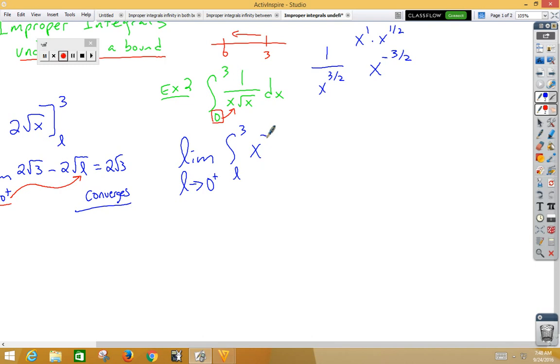So we're integrating x to the negative 3 halves dx. Well, when you integrate x to the negative 3 halves, you get negative 2 over root x.